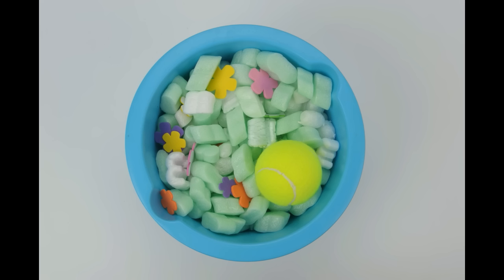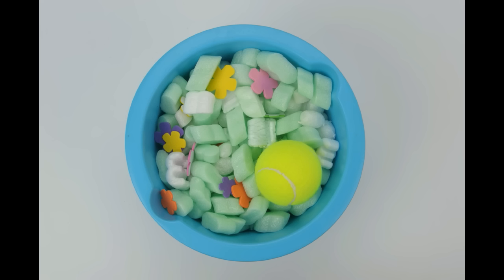If you would enlarge the cell until it has the size of a kitchen ball like this one, the nucleus would be roughly the size of a tennis ball. And within that tennis ball, there would be about 20 kilometers of string. So you can probably imagine that this needs to be really tightly packed to fit.